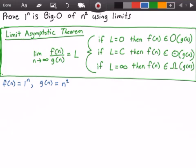Okay, so now let's use the Limit Asymptotic Theorem. So we take the limit as n approaches infinity of f(n) divided by g(n). All right, and we said our f(n) is 1 to the power of n, and our g(n) is n squared. So now we get the limit as n approaches infinity of 1 to the power of n divided by n squared.